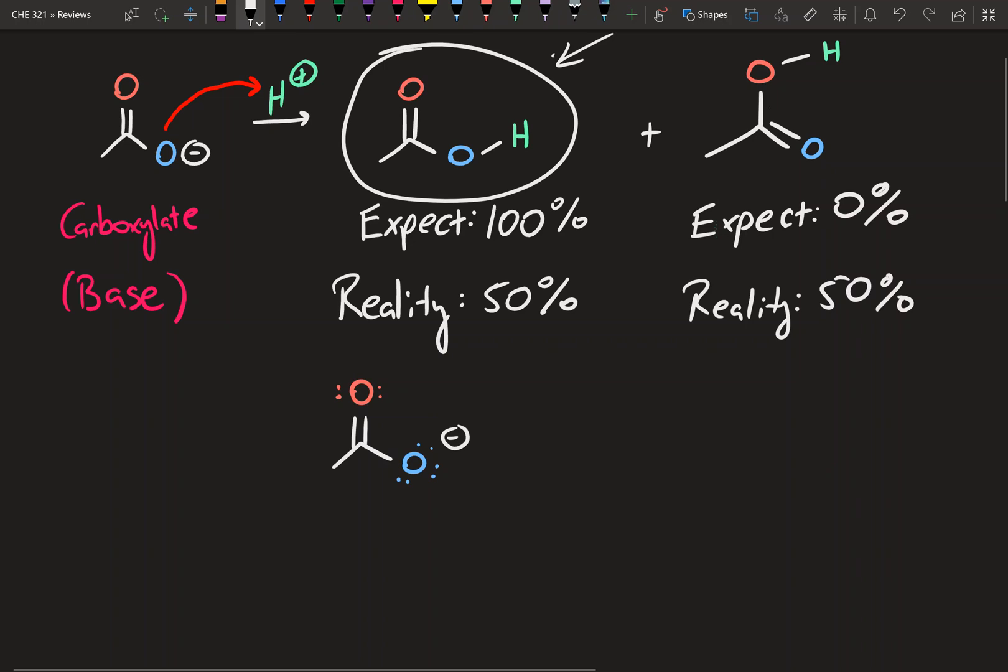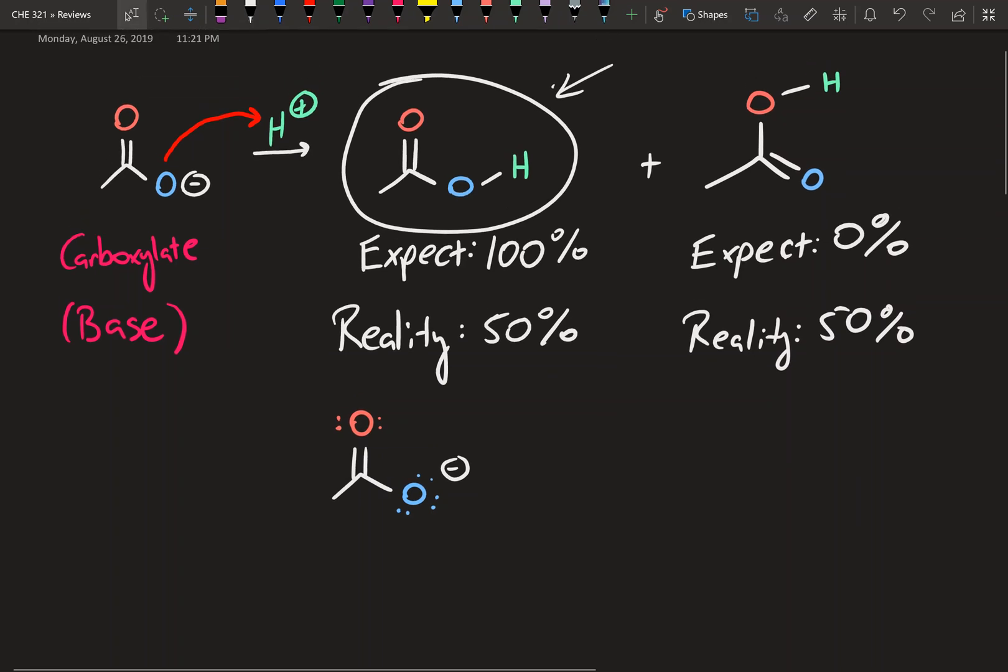And so we're going to draw a resonance structure, and a resonance structure is essentially just a contributing structure that can show an alternate view almost of how electrons are represented within a molecule. Because electrons, the way that we show you as molecules like this is not actually how the molecule exists in nature. So let me just show you and it'll be much clearer.